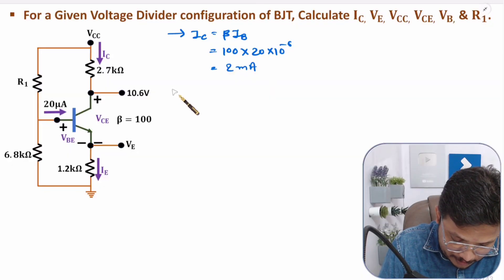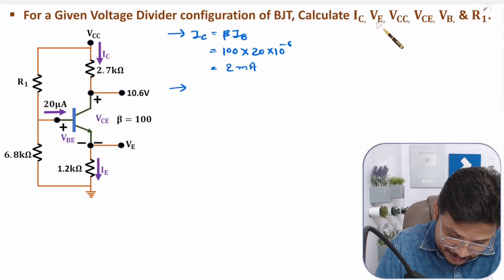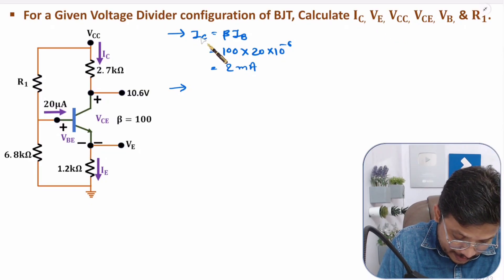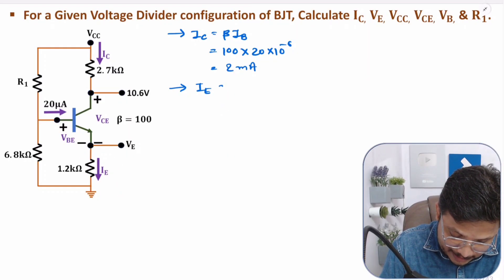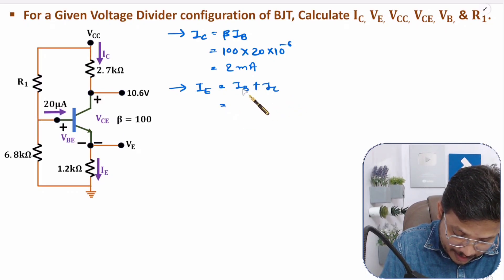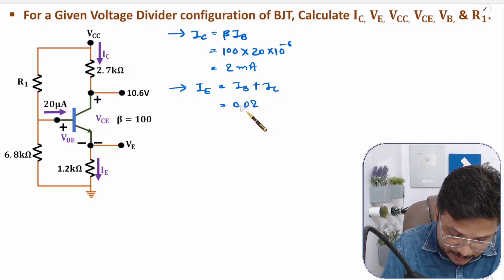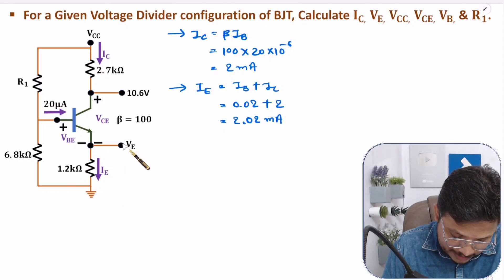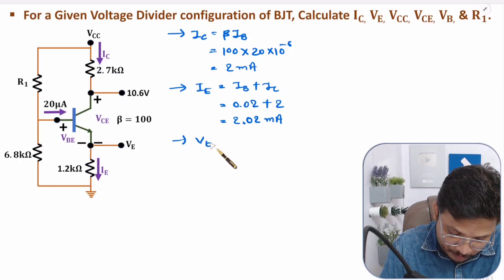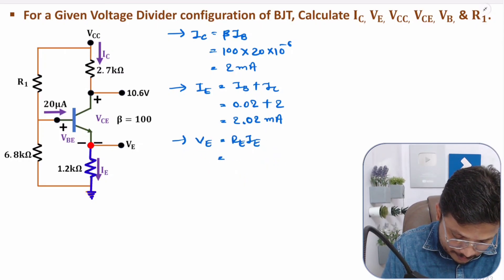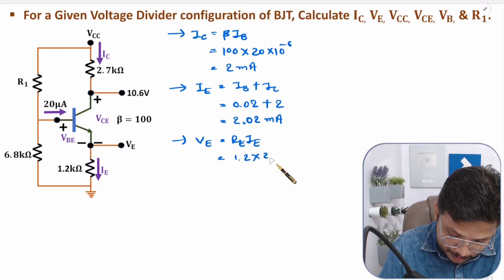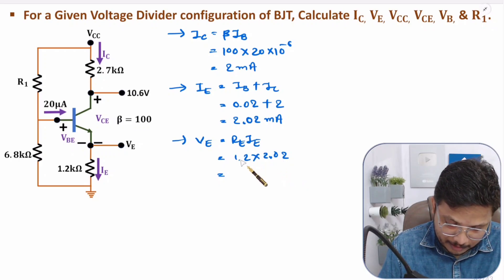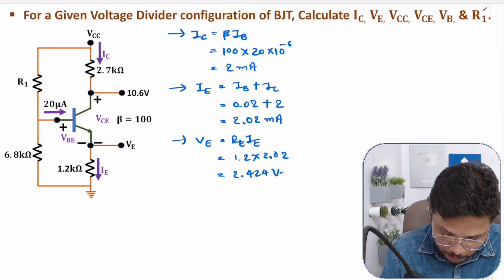Once we have IC, we can calculate VE. We have IC and IB, so IE can be calculated first. IE equals IB plus IC. IB in terms of milli is 0.02, plus IC which is 2, so IE equals 2.02 milliamps. VE equals RE times IE, that is 1.2 times 2.02, giving 2.424 volts.